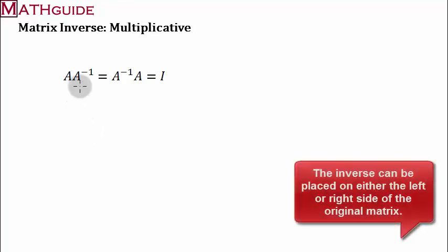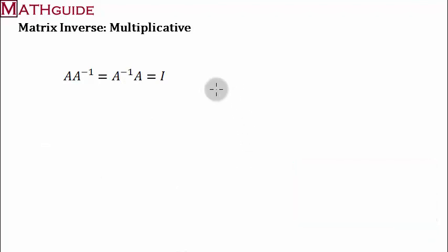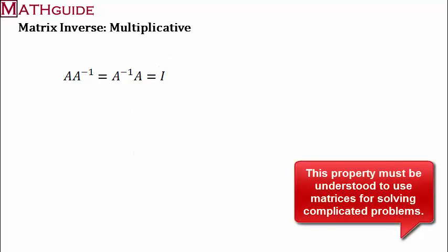The neat property about identity matrices is that when you multiply a matrix times its inverse, notice that here I have matrix A. And that little negative one exponent means that it is an inverse. So anytime I multiply the inverse of a matrix times the matrix itself, and it doesn't matter how I arrange it. I could put A times A inverse. I could put A inverse times A. But when I multiply, I get these identity matrices.